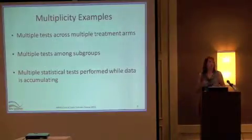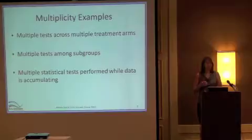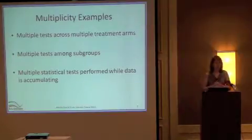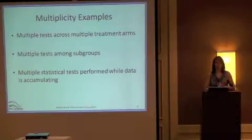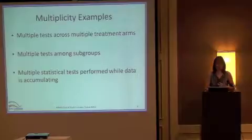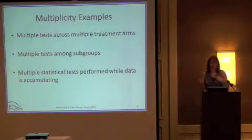I'm going to go through a bunch of different examples now — not get very statistical about methods to account for multiplicities, just give a lot of real-life examples from my experience as a collaborator with clinicians. I break them down into three categories: multiple tests across multiple treatment arms in the trial, multiple tests among subgroups, and multiple tests performed while data is accumulated.